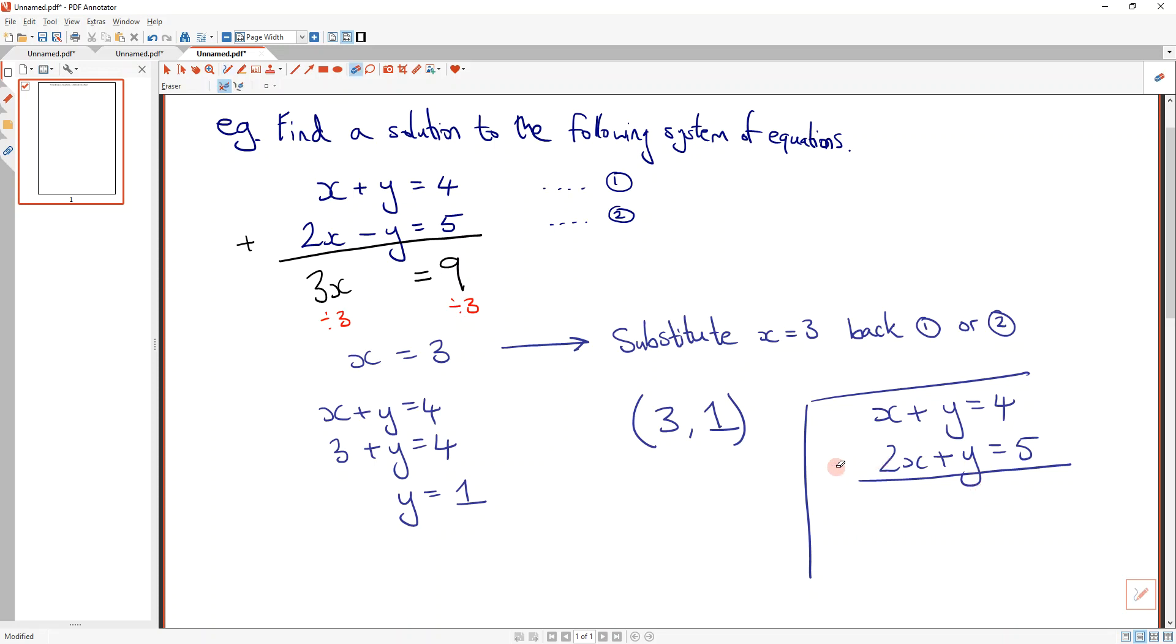You could multiply by negative 1. Right, I could multiply by negative 1. Good. And that would be able to do what we've done here. Is there anything else that I could do that might be a bit more straightforward? I could just subtract them. Yes, I could just subtract them. I could do, what's x take away 2x? Negative x. Negative x. What's y take away y? Nothing. So the x is gone. What's 4 take away 5? Negative 1.